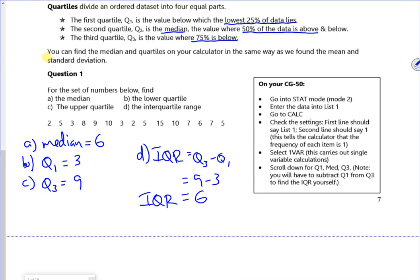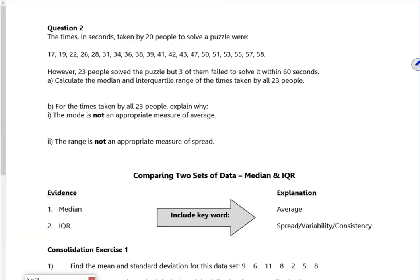So we'll put some on the next page. So it says in question two, I've got all these different times it takes to solve a puzzle. So it says 23 people solved the puzzle, but three of them failed to solve it within 60 seconds. So I've kind of got three people tagged on the end here with unknown numbers that are massive.